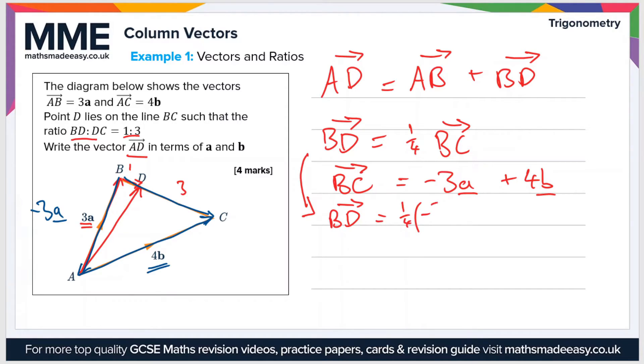So therefore BD is equal to a quarter of minus 3a plus 4b. Now if we expand out that bracket we get that BD is equal to minus 3 quarters a plus b. So finally then if we go back to our original expression for AD, this one at the top, then we can write AD.